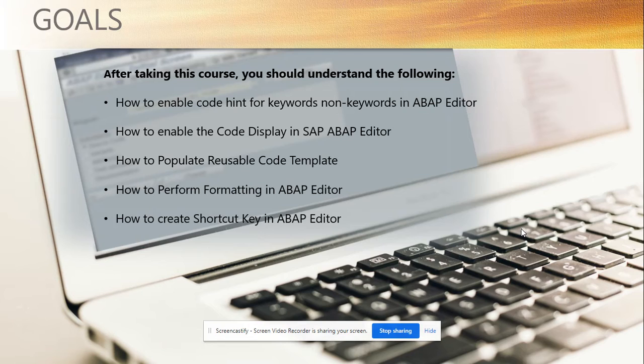How to enable the code display in SAP ABAP Editor. We have different displays. The first step — the code, the keyword, non-keyword — is very important.